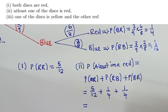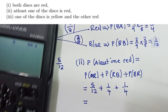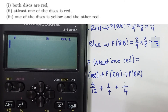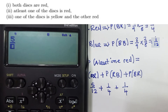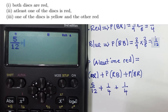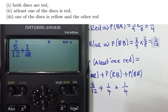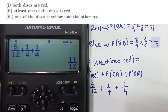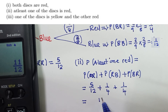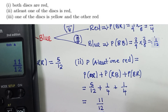When you add, what answer are you getting? So it's 5 over 12 plus 1 over 4 plus 1 over 4. I'm getting 11 over 12. So here it's 11 over 12 as our answer.